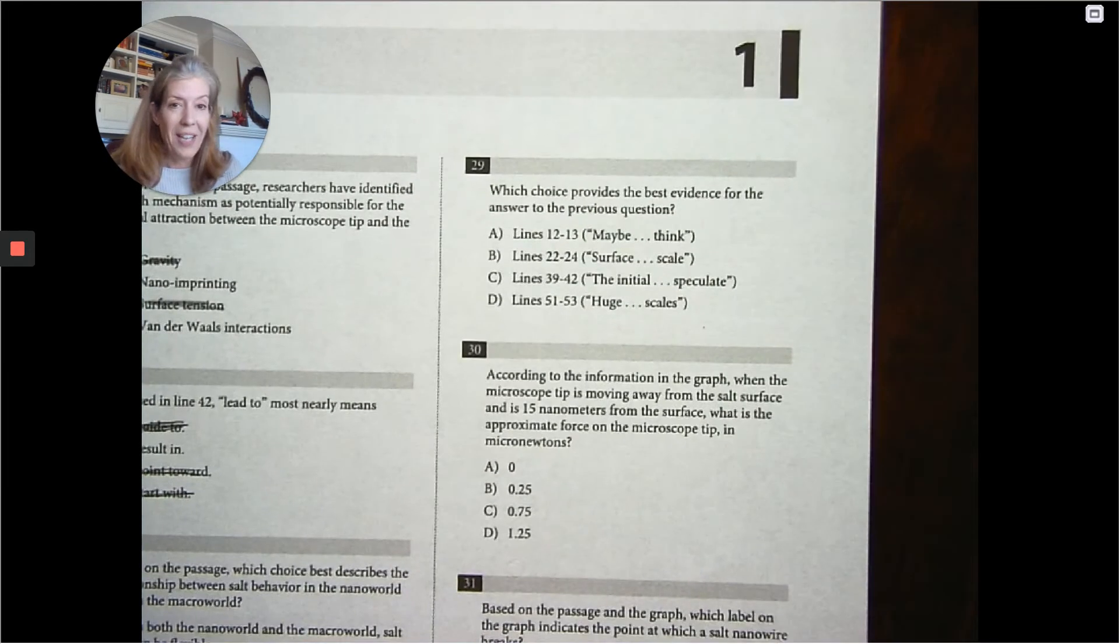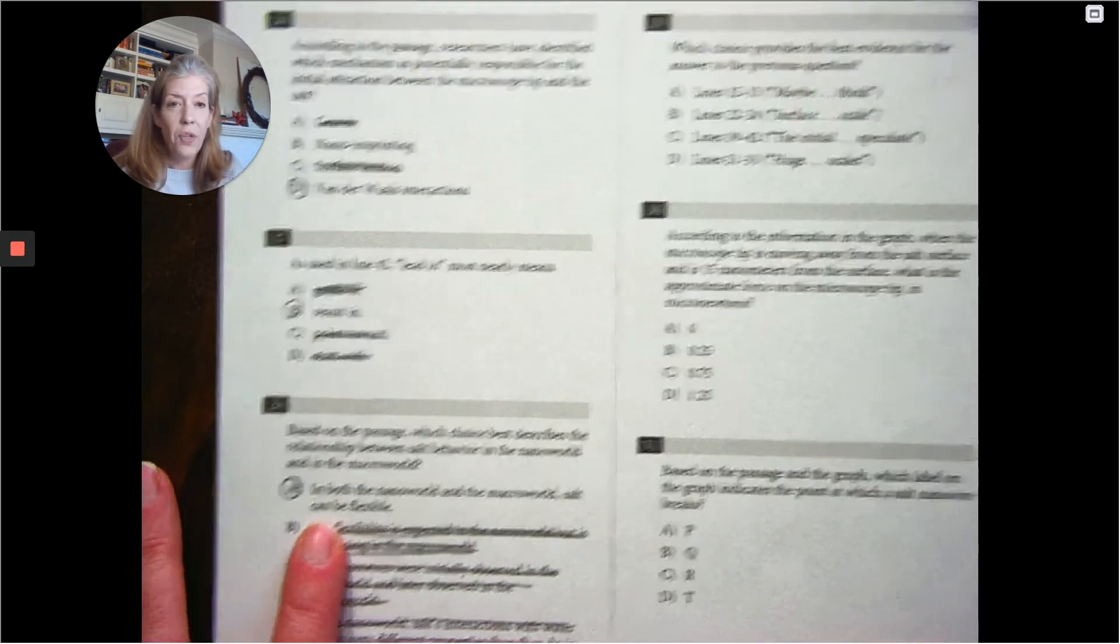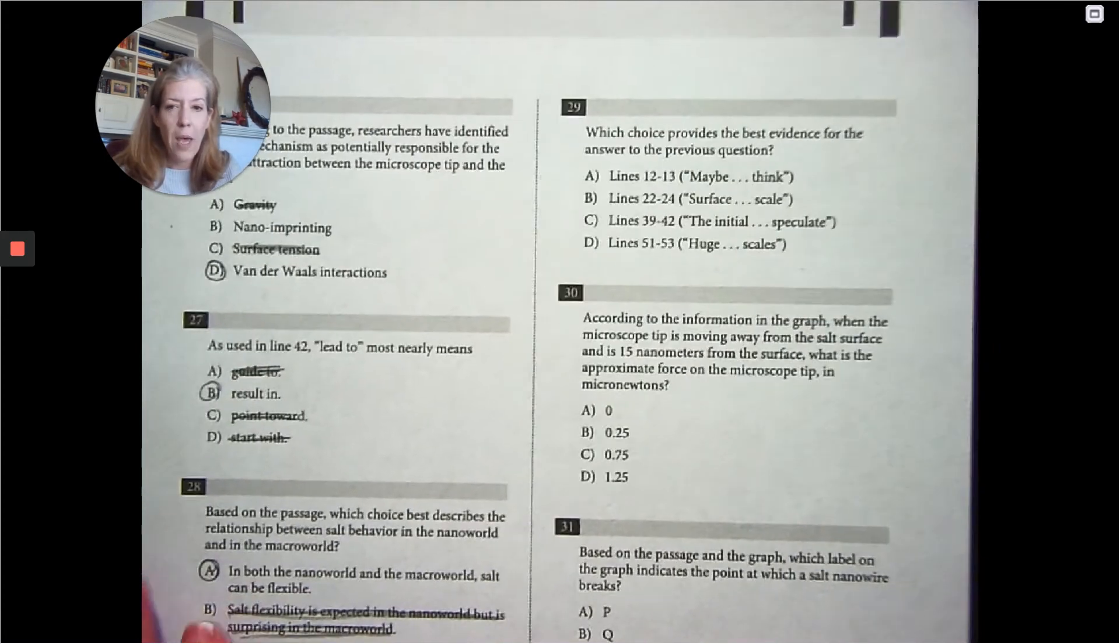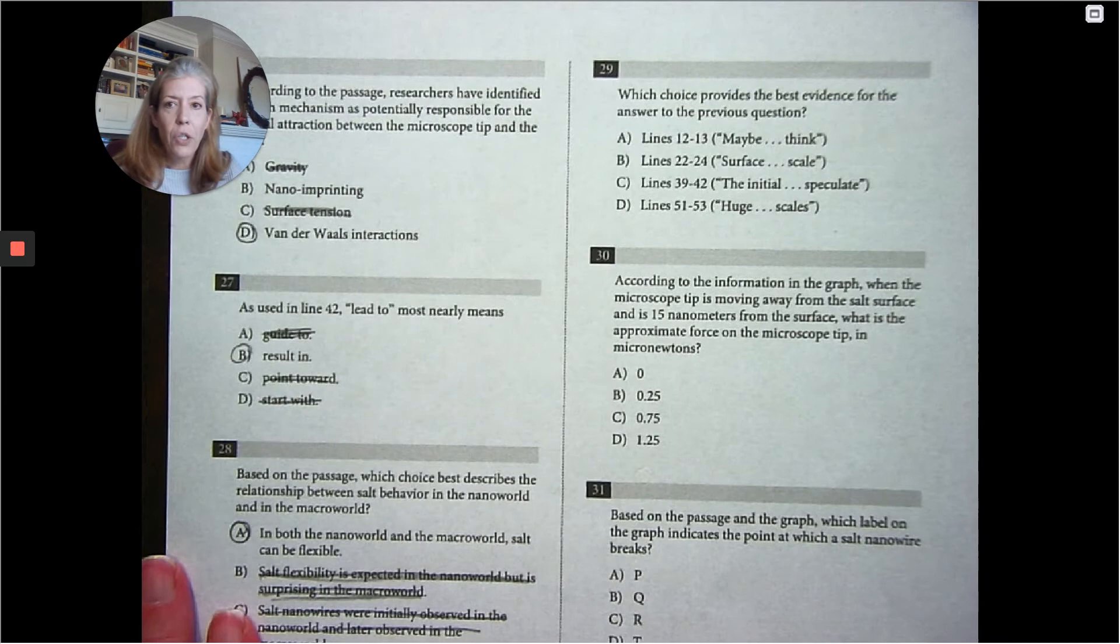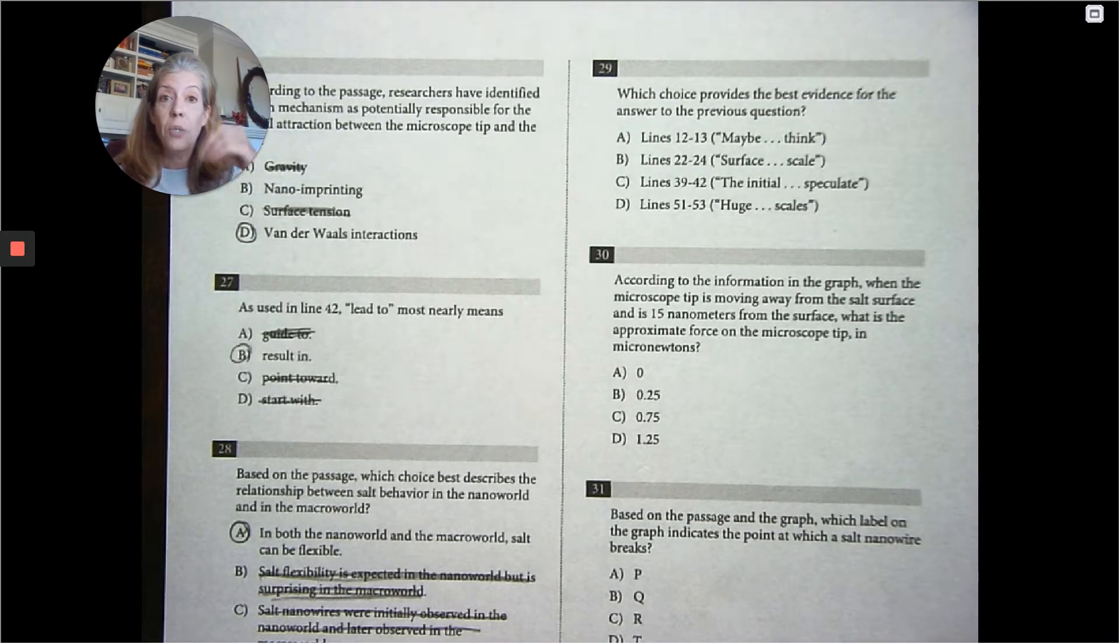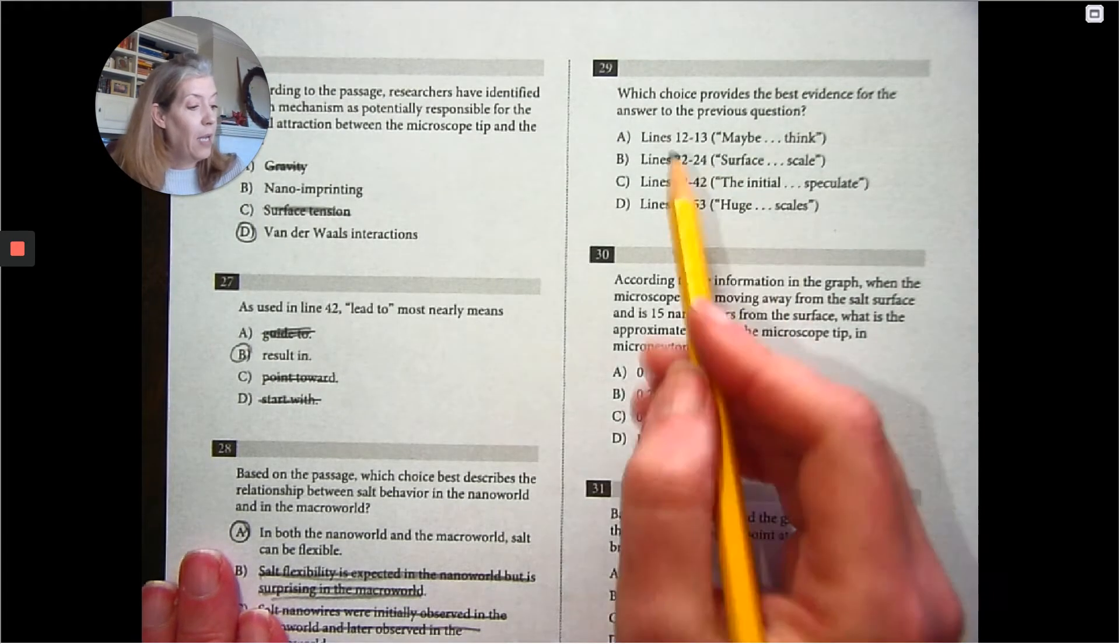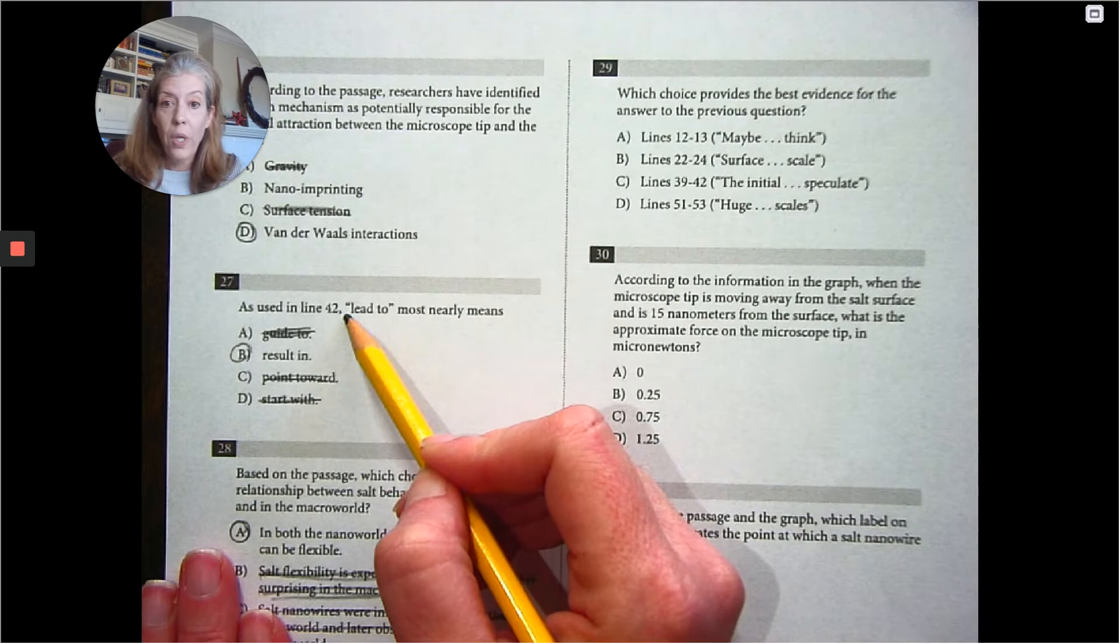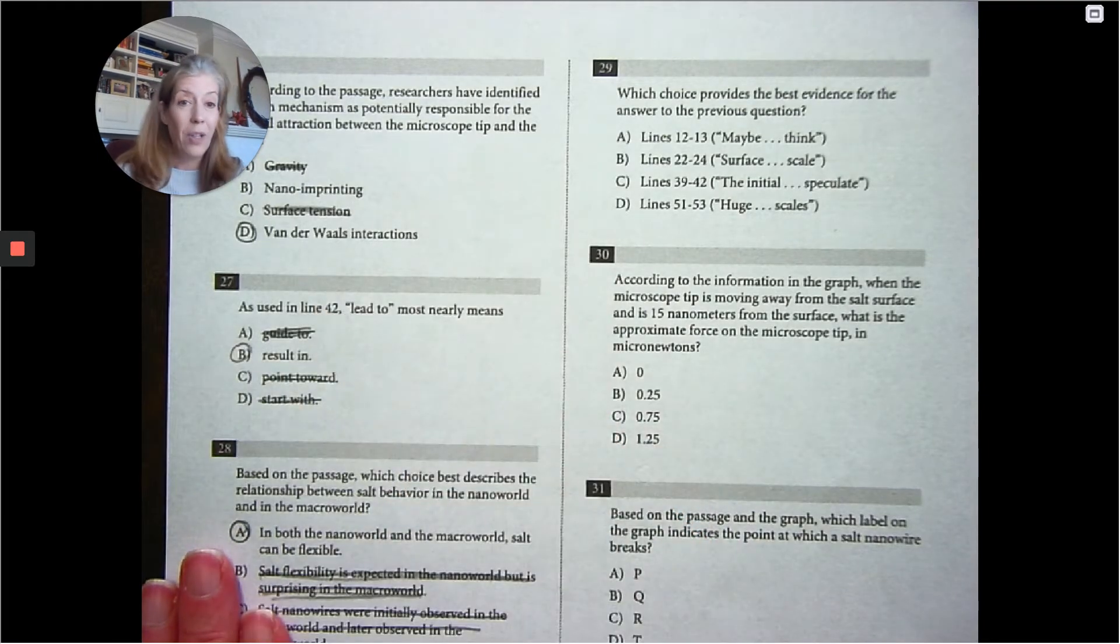Which choice provides the best evidence for the previous question? We're looking that in both the nano world and the macro world, salt can be flexible. I'm really hoping we have this one underlined. But I'm having a look at where we can eliminate. So we are at the very end of our questions. There hasn't been any tables in between. So we can really determine that line 42 was the last line that we used.